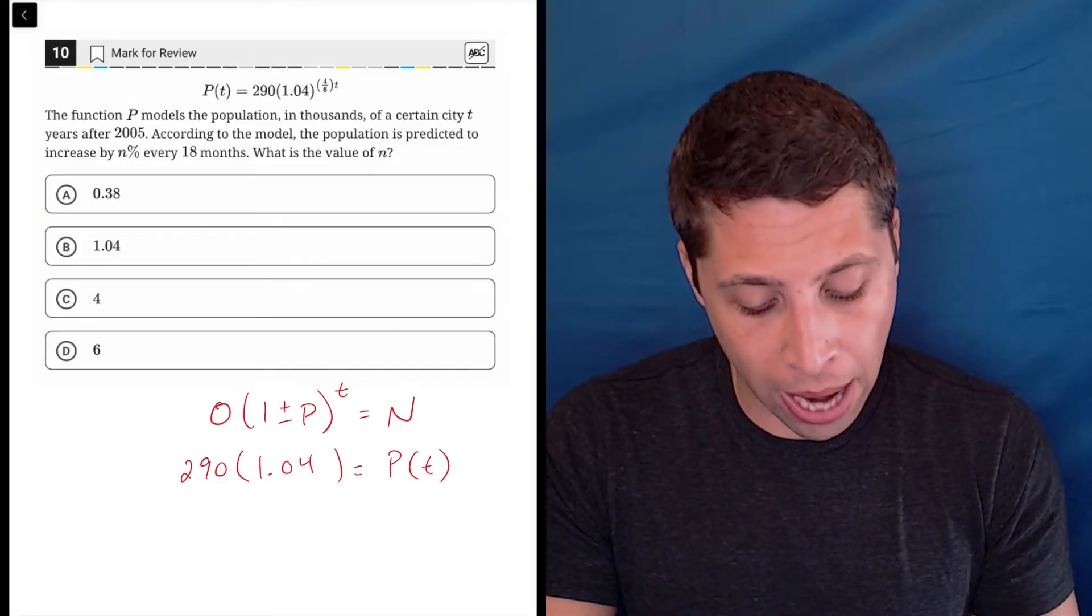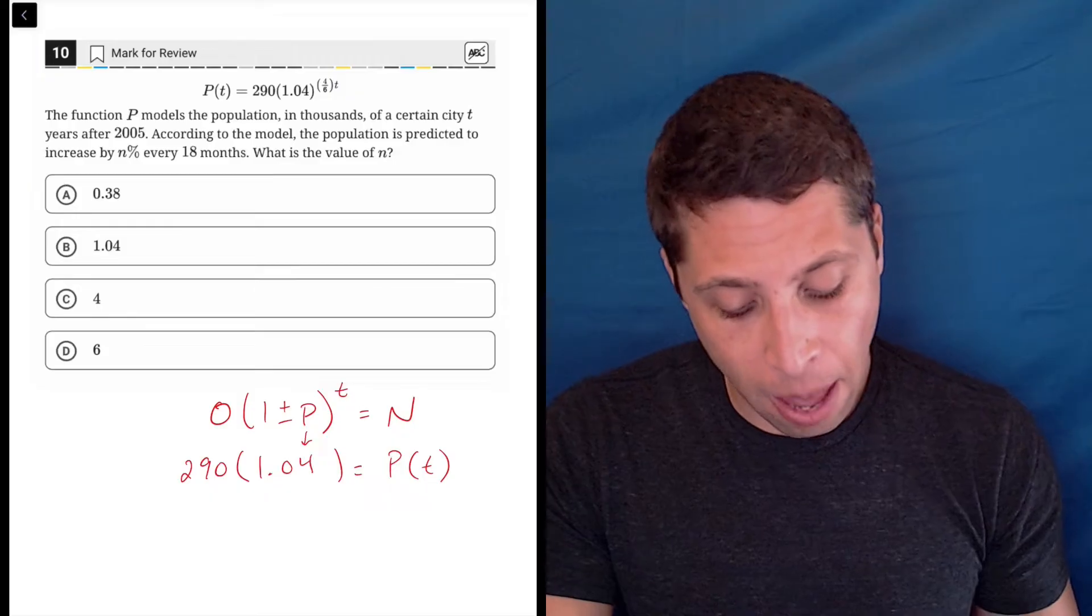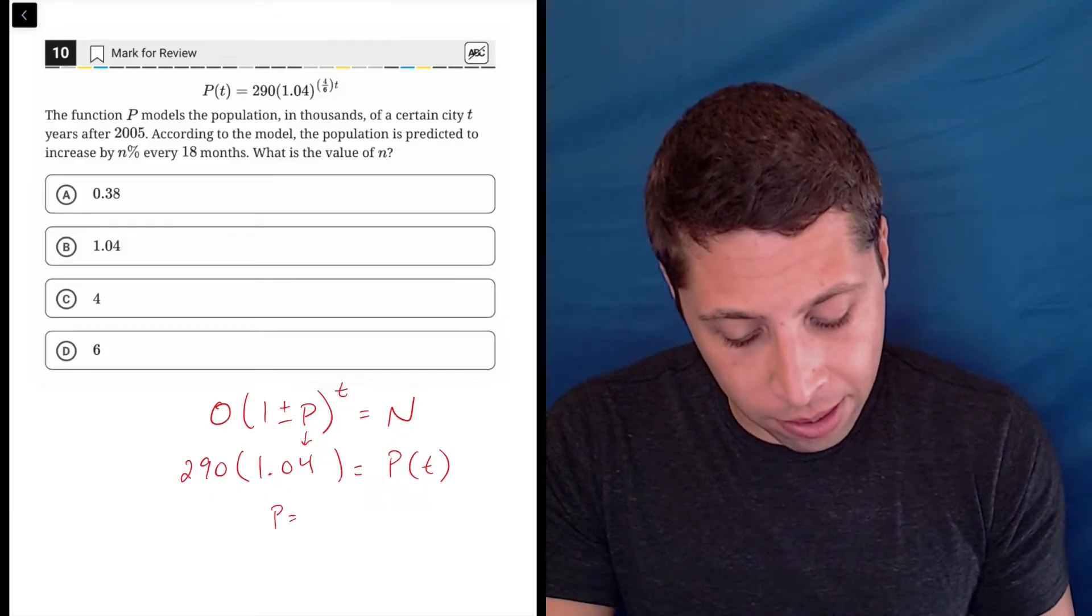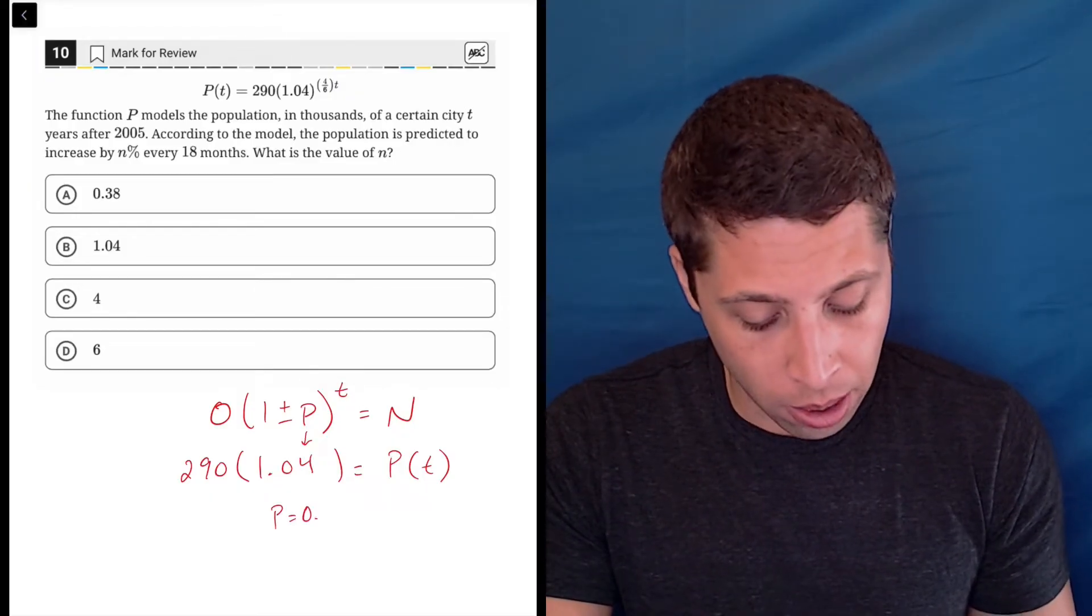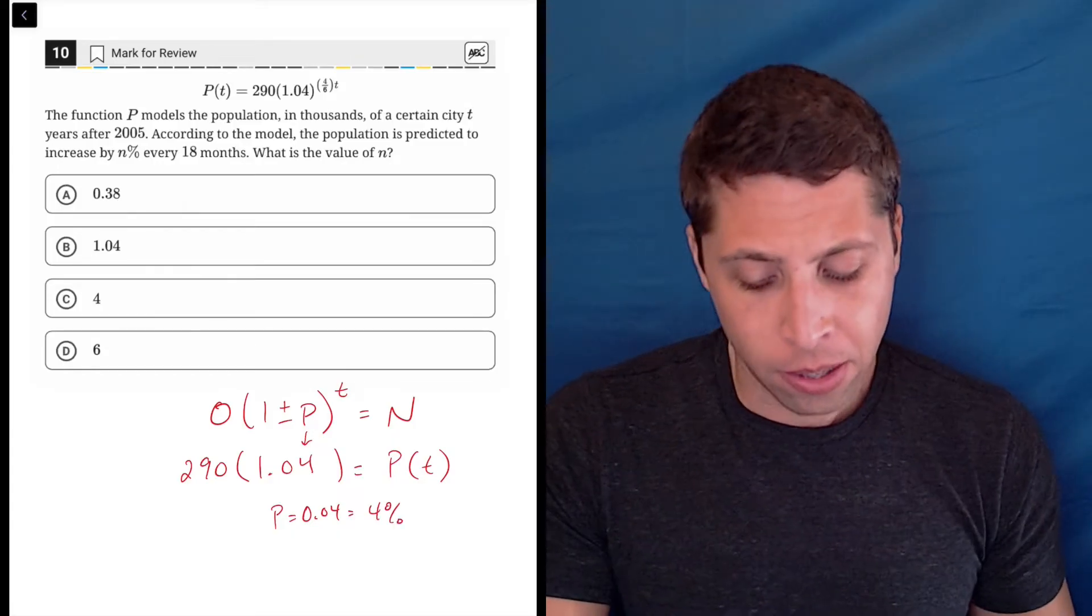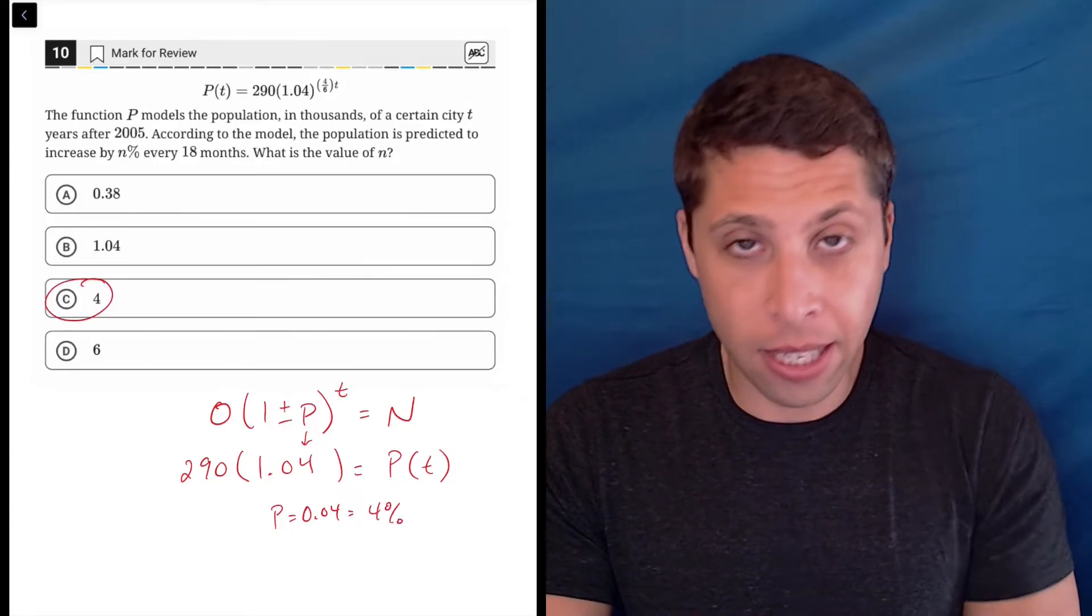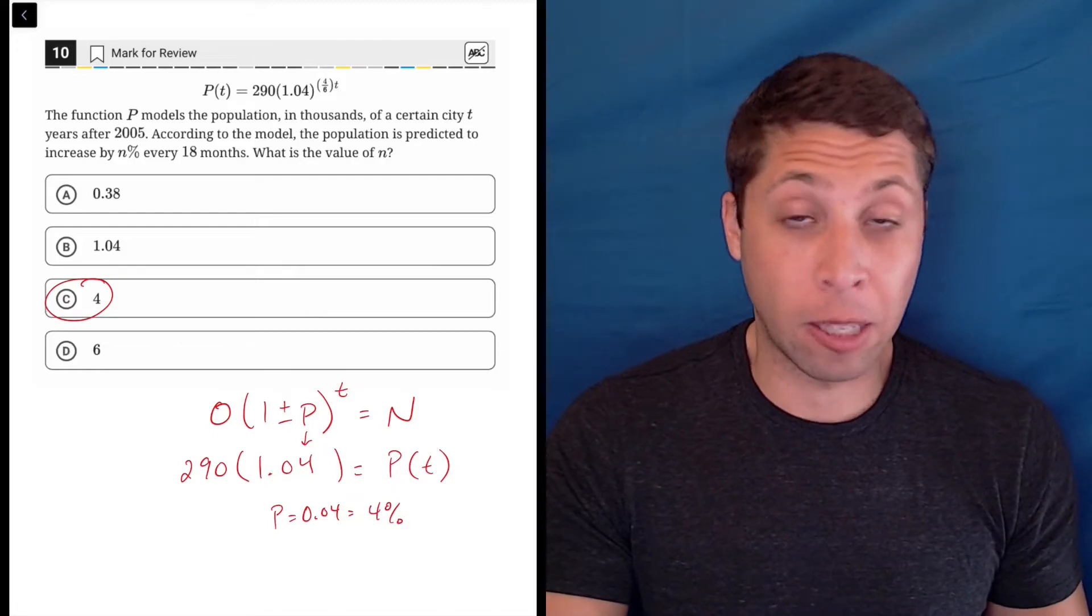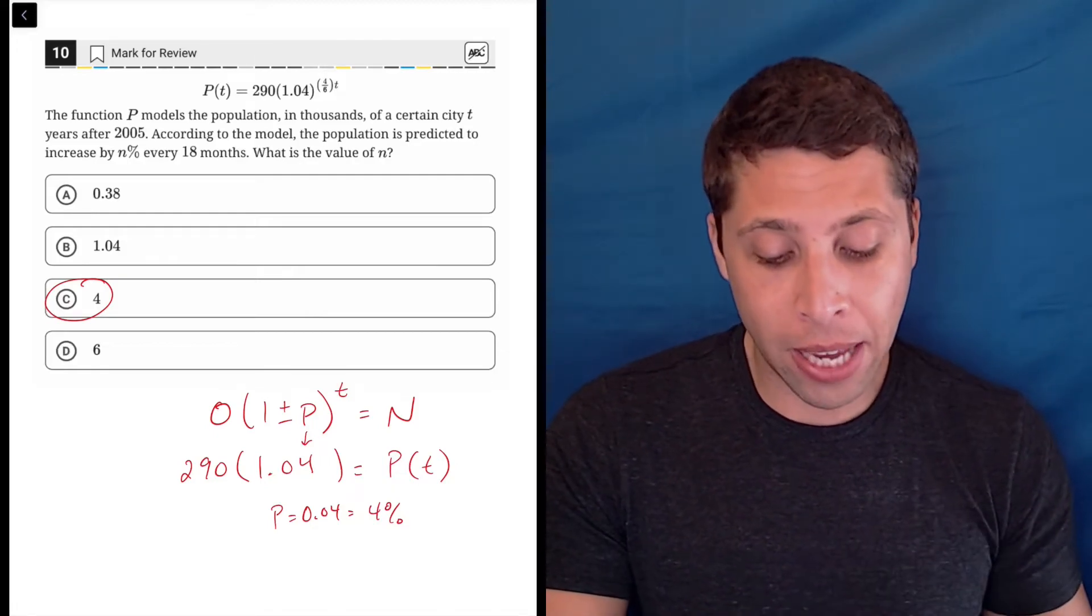Think about the math here. What would happen if it's an increase? That means the percentage is .04, which is 4%. So it seems like C is the answer. If we understand how exponentials work, that's going to be it.